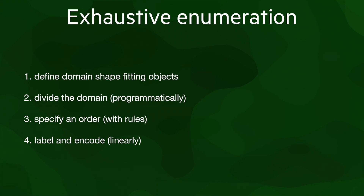Formalizing how exhaustive enumeration models work, we can say that they specify objects through 4 steps. They first define the shape of a domain in which the objects to be represented should fit. Then they divide the domain using a structure of many small cells. This subdivision is defined programmatically using simple rules. Next, they specify an order that passes through all the cells once. Finally, they use this order to encode the objects that are present in every cell.